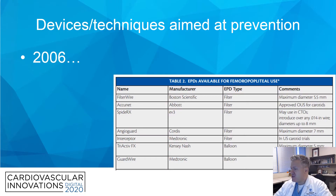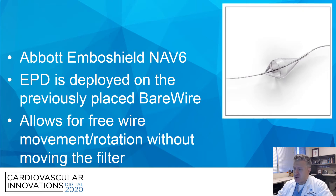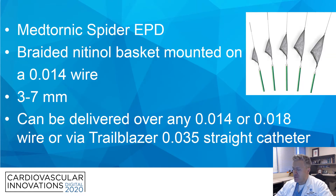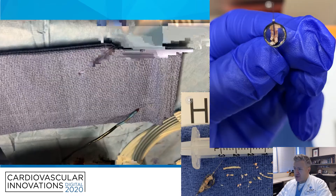Devices are mainly aimed around embolic protection devices. Most commonly we think of two in particular: the EmboShield NAV-6 by Abbott, in which the filter is deployed on the bare wire, allowing for free wire movement without moving the filter. Then the Spyder embolic protection device by Medtronic, a braided mounted device on an 014 wire, coming between three and seven millimeters, deliverable over any 014 or 018 wire or microcatheter.